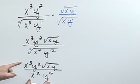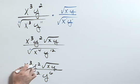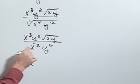Now I just have left reducing these. X to the third over x squared is going to be x to the first.